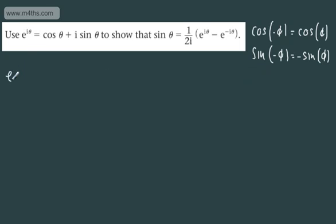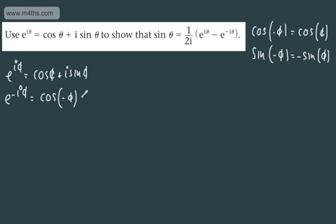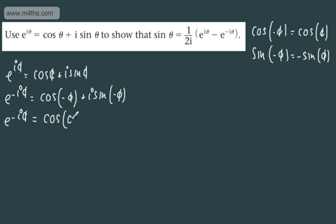Firstly, we have e to the i theta is equal to cos theta plus i sine theta. Now let's look at e to the minus i theta — that gives us cosine of minus theta plus i sine of minus theta. Applying our odd and even functions, we can rewrite e to the minus i theta as cos theta minus i sine theta.